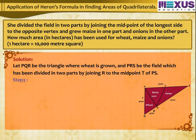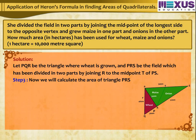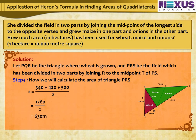Step 3: Now we will calculate the area of triangle PRS. Here S = (340 + 420 + 500) ÷ 2 = 1,260 ÷ 2 = 630 meters.